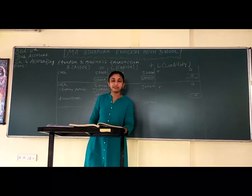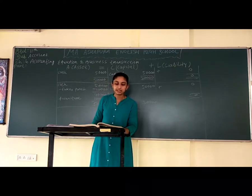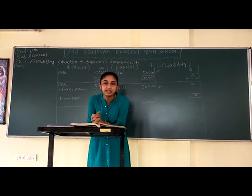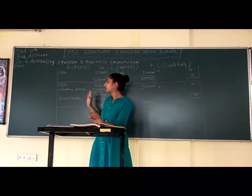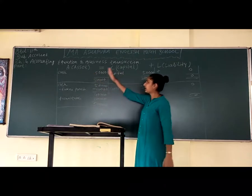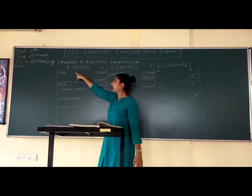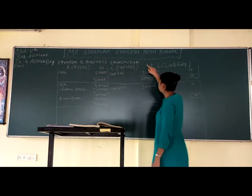We are going to solve illustration number 1 with detailed information of this equation. The first transaction and journal entry: cash of Rs. 50,000 brought and business commenced. Business mein cash aayi aur business start kia. Journal entry will be cash account debit to capital account. Cash is an asset. We have to draw three columns: one for asset, another for capital, and third for liability. So, Assets = Capital + Liability.